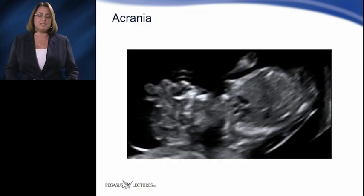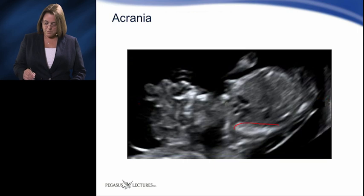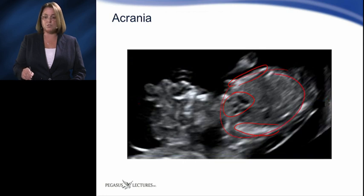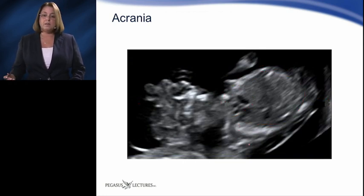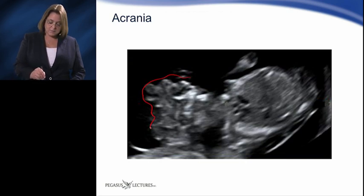This image demonstrates the echogenic ribs, anechoic heart chambers, and the thorax and abdominal tissues. We see the ribs right here, and the heart, and then the thoracic tissues right in through here. The fetal brain tissues are visualized, but the skull is not seen. Here we see the brain tissues.